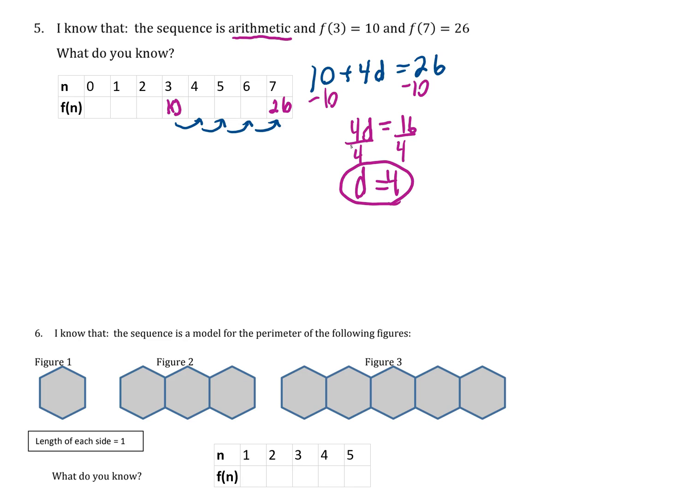We found one of the things that we needed. Now we can find the rest of the missing terms of the sequence. 10 + 4 is 14, 14 + 4 is 18, 18 + 4 is 22. Going in the other direction, I subtract by 4: I get 6, then 2, then negative 2.